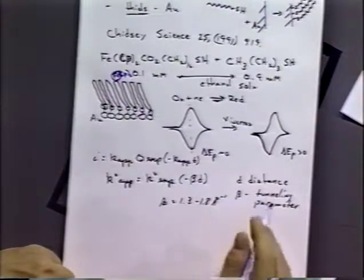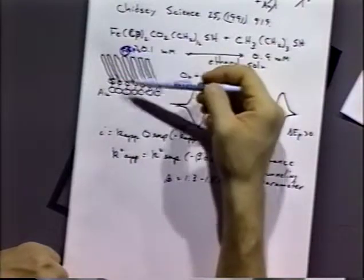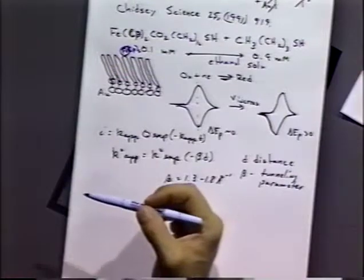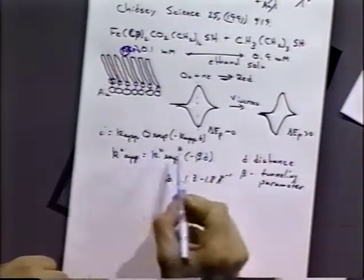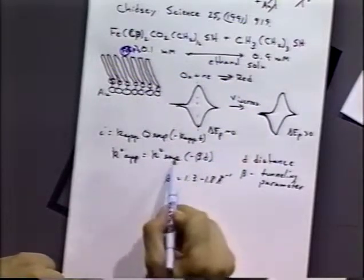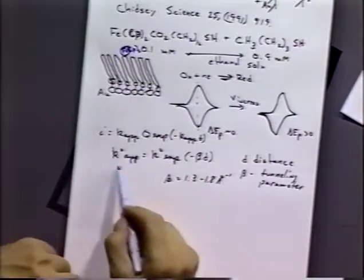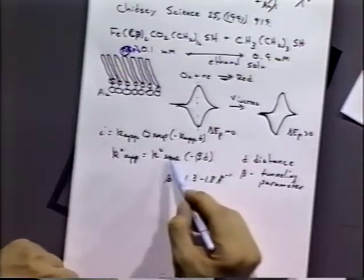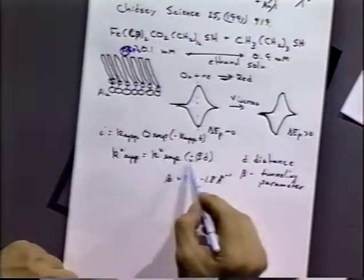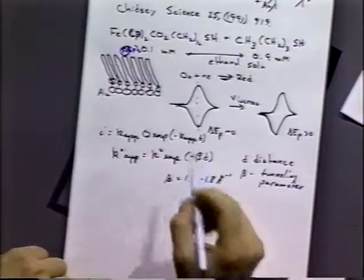And he found that beta was on the order of 1.3 to 1.8 angstroms, reciprocal angstroms. Let's review this experiment. We've put this ferrocene on the surface. We're doing electron transfer back and forth from the surface. What we want to do is measure the true rate of electron transfer. The idea is that the true rate of electron transfer is hidden by the fact that we measure some apparent rate constant.